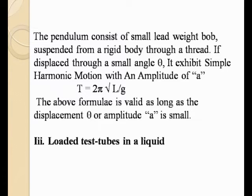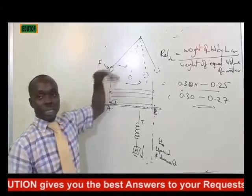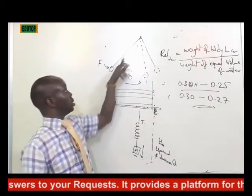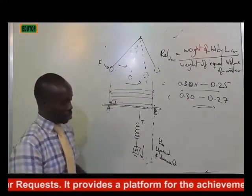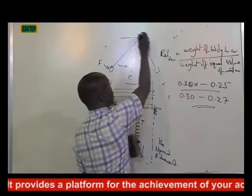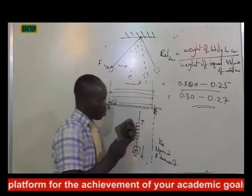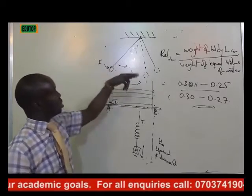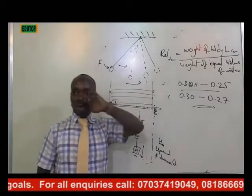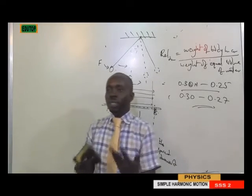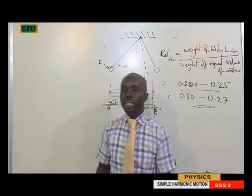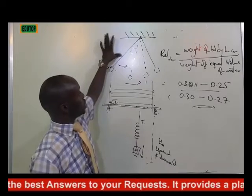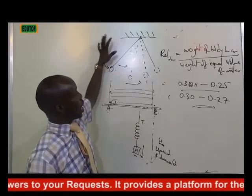The pendulum is suspended from a rigid point — the wall — through a thread. When force is used to tilt the body, it goes to and fro. If it is displaced through a small angle theta it performs simple harmonic motion, with an amplitude A — that is the length of displacement.